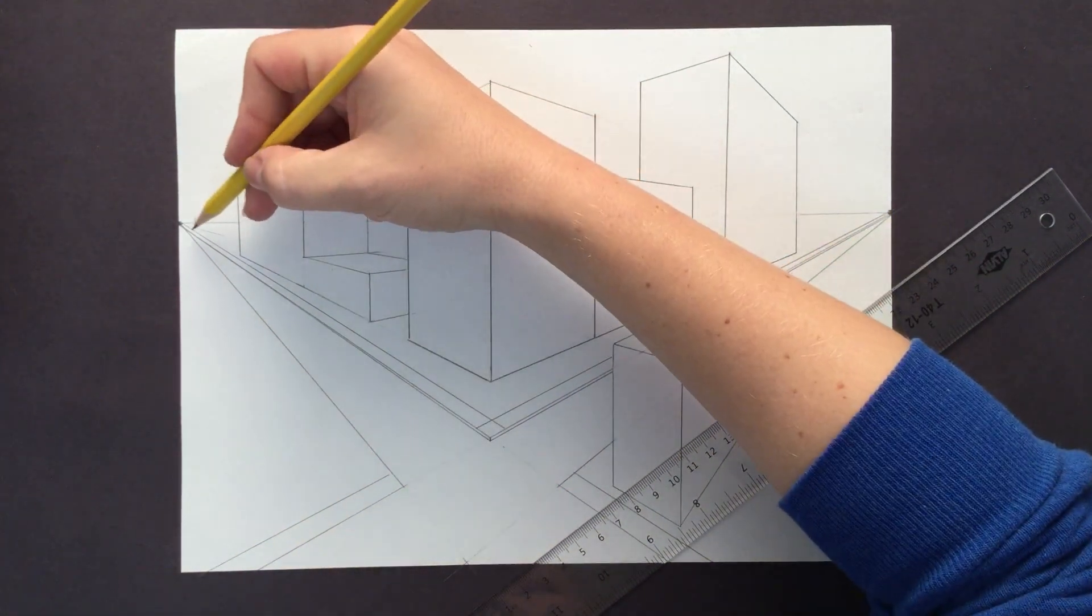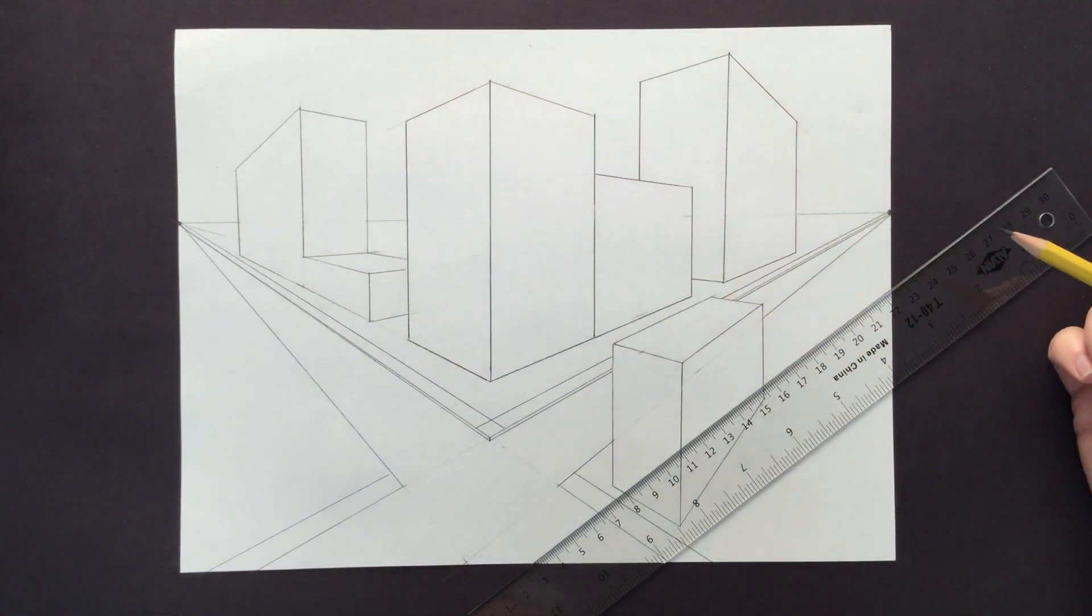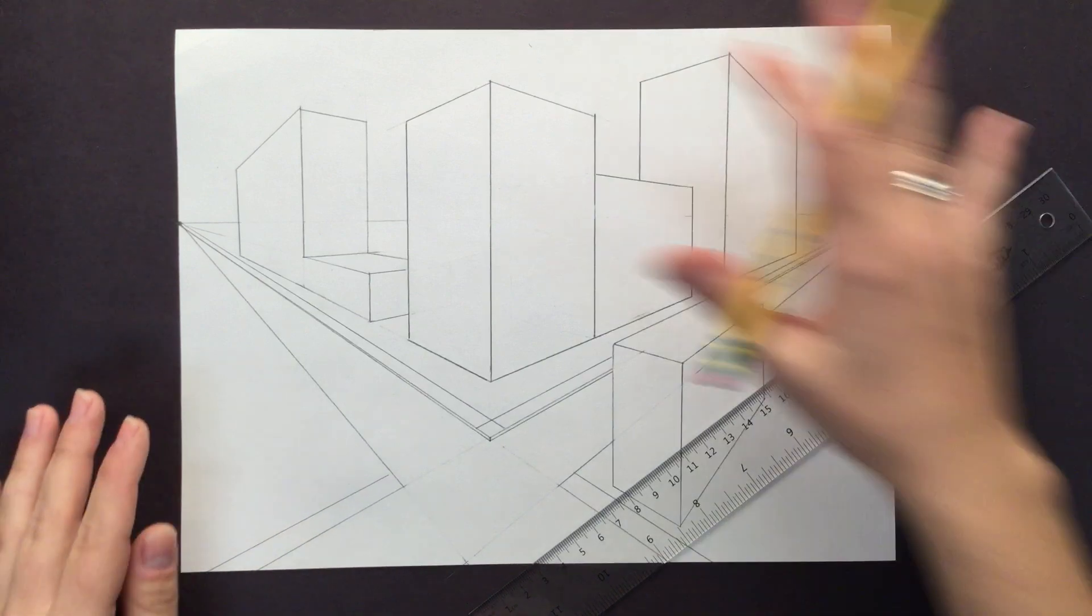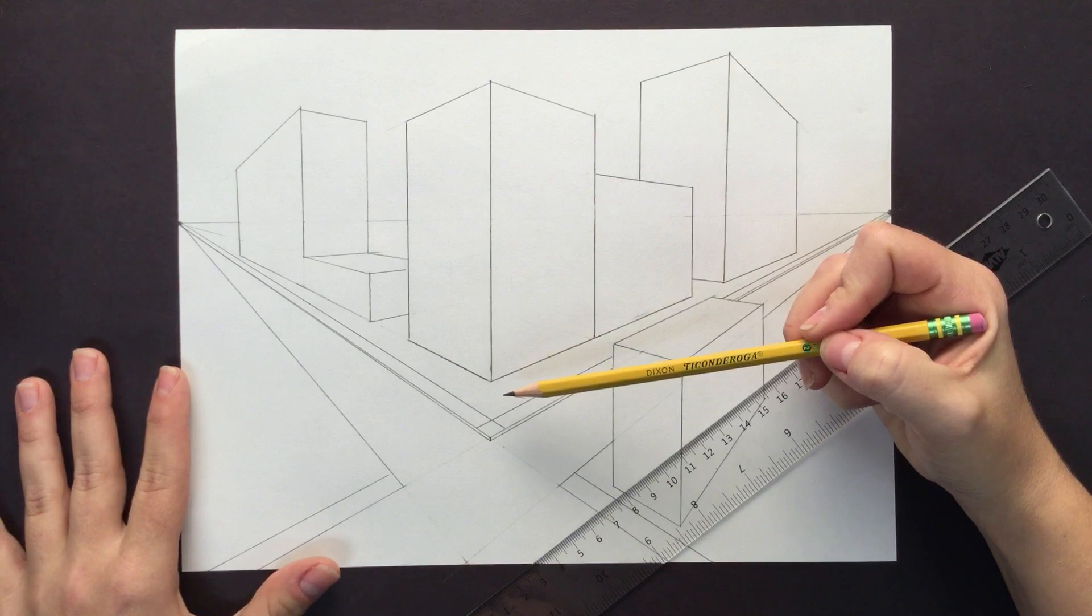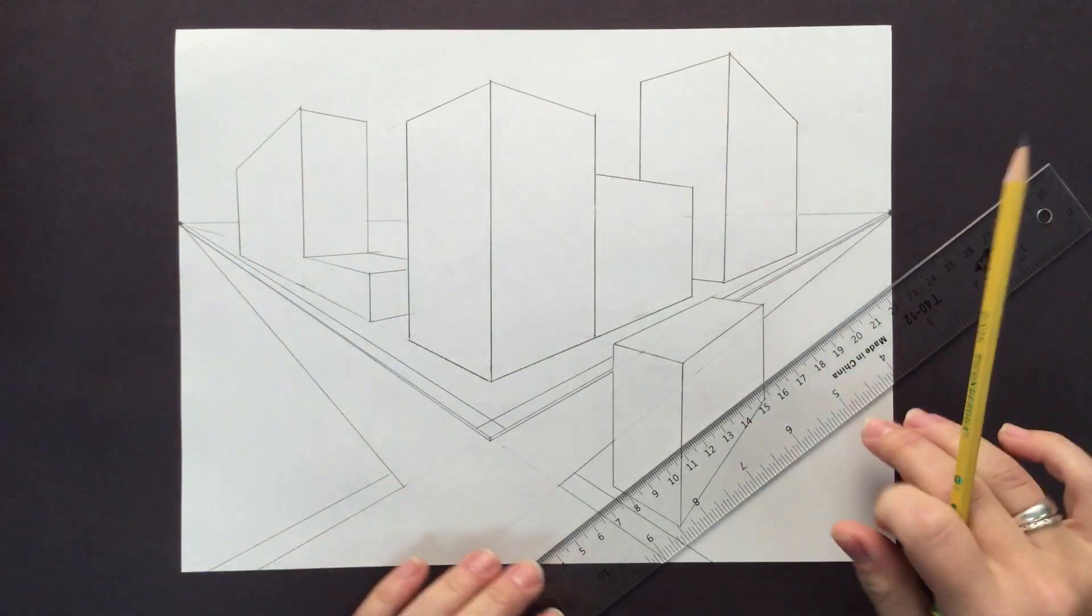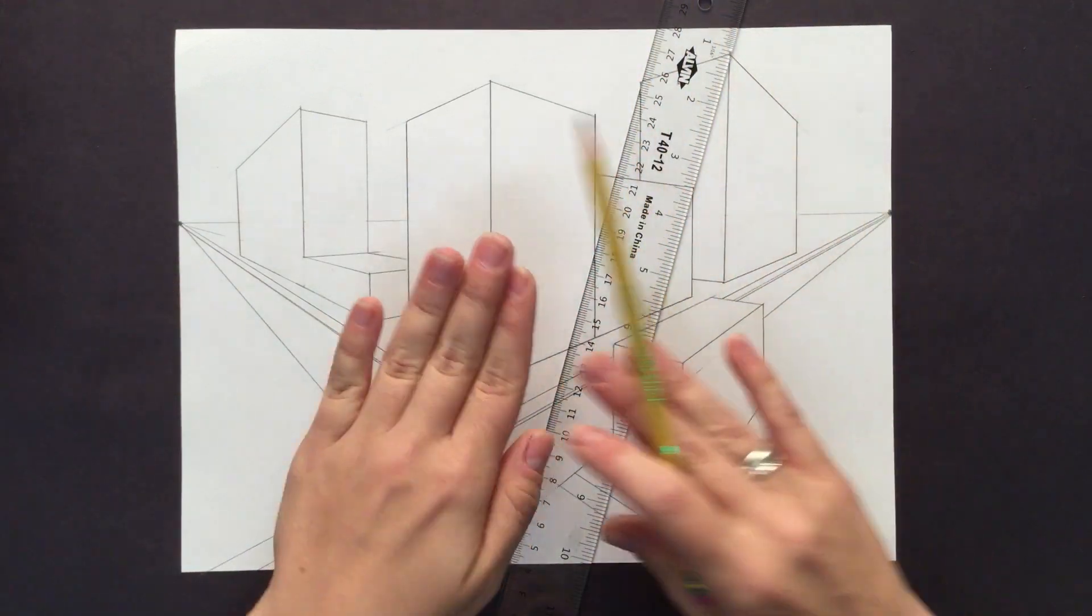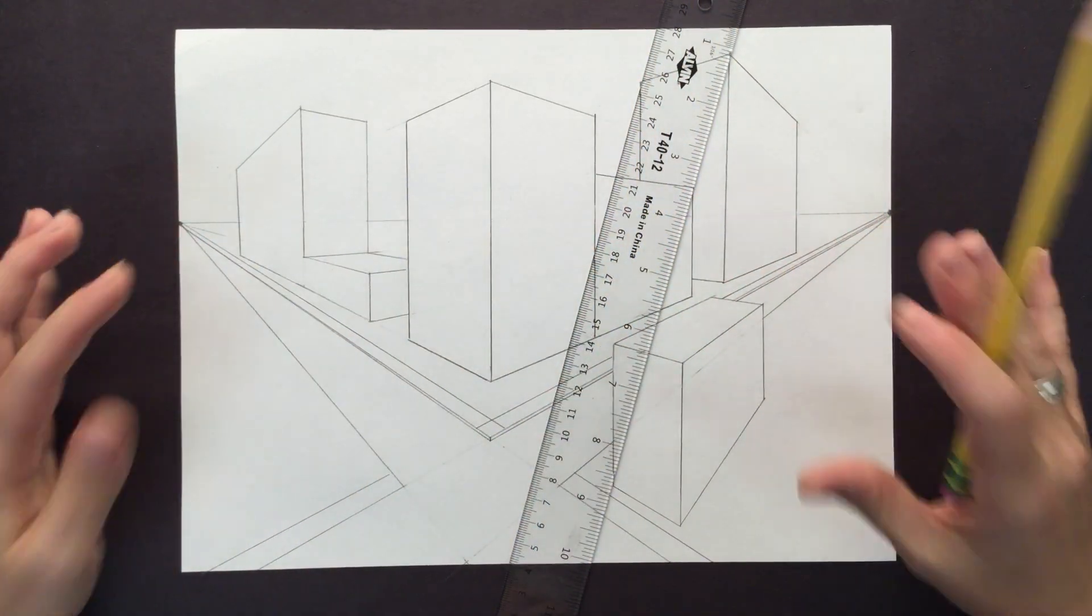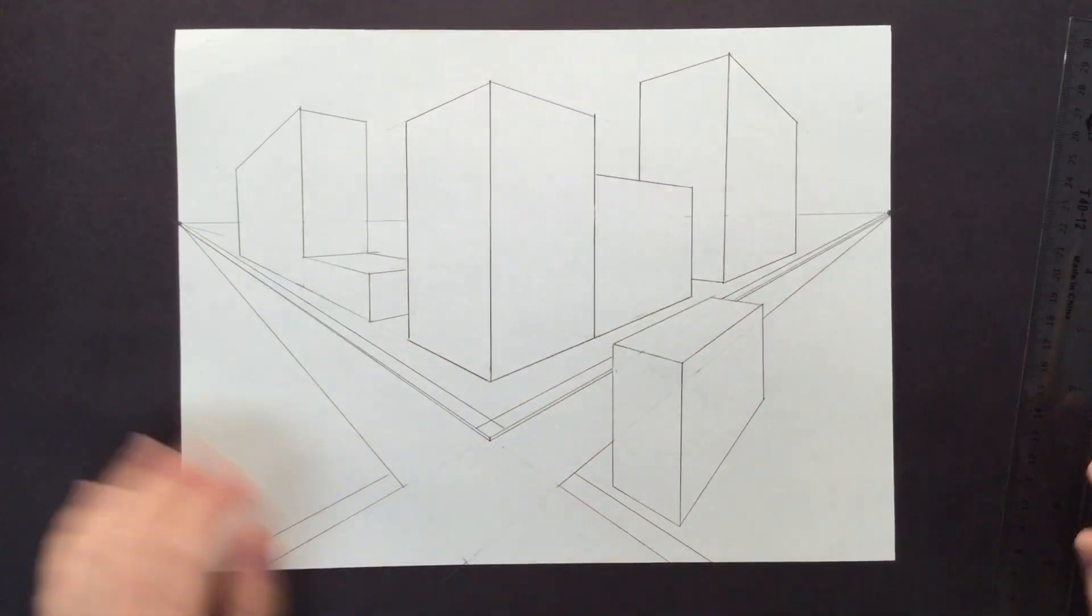If I want to make sidewalk lines, if I want to make the cracks in the sidewalk, I also have to use the vanishing point. A good rule of thumb when you're working in perspective, two-point perspective, is all of your lines either have to go perfectly vertical or point to a vanishing point. If you have any line on this drawing that isn't perfectly vertical or pointing to vanishing points, it's not going to be correct. So just keep making sure you're checking your work as you go.